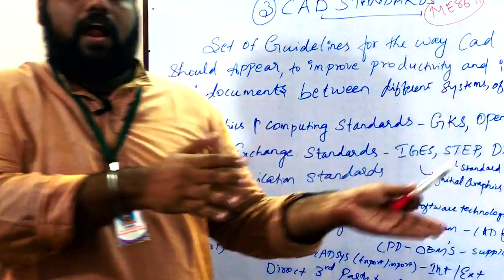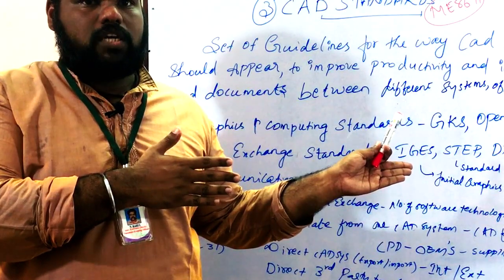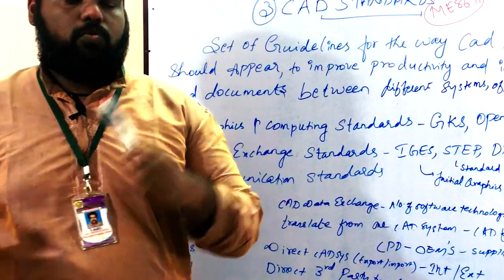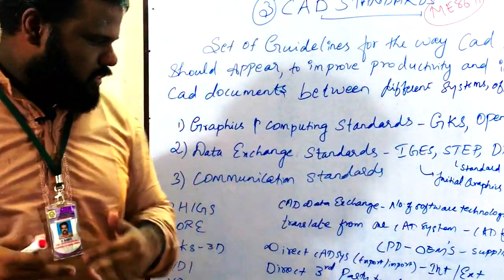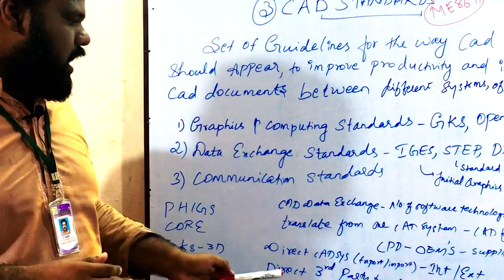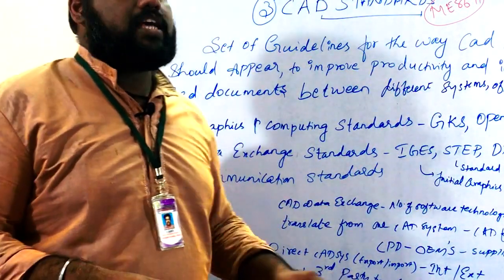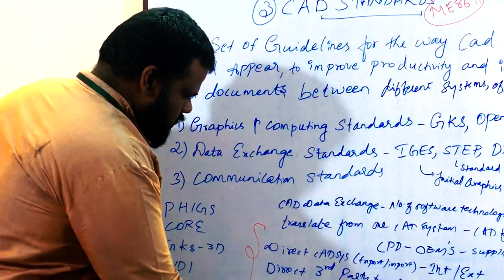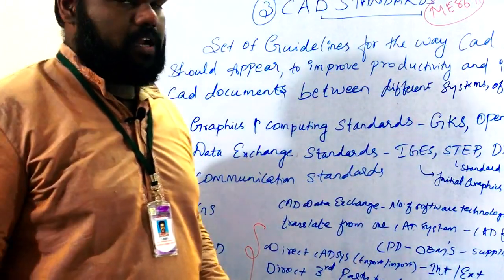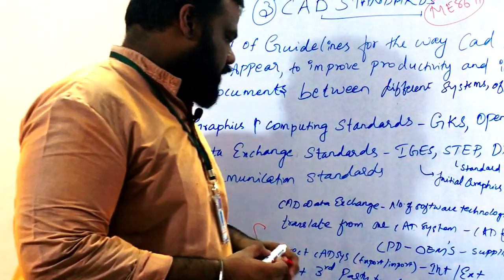The external direct CAD system is between a supplier and an original manufacturer. For example, if Mahindra has a project and your company has to transfer the data to Mahindra — that is an external source, and you have to follow certain software technology. Beyond direct CAD systems, we also have a direct third-party translator and an intermediate data exchange format — these are the three types of CAD data exchange methods.